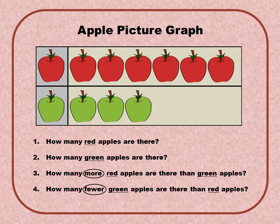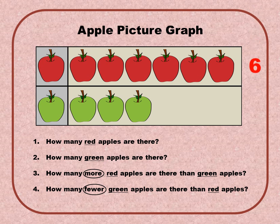This is an apple picture graph. We're going to use the data on this graph to answer the questions below. Question number one says: how many red apples are there? When we count the apples, we don't count the very first one because that's just telling us this is the red apple category. We count the rest: one, two, three, four, five, six — there are six red apples.